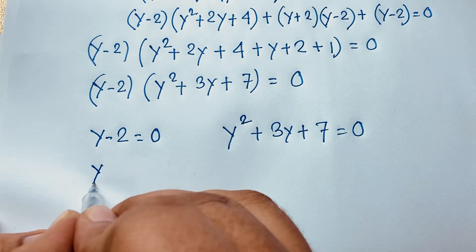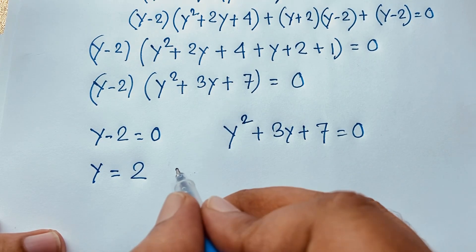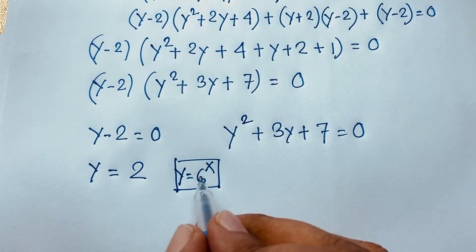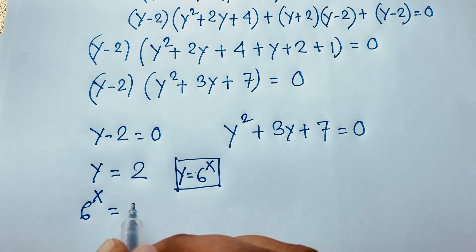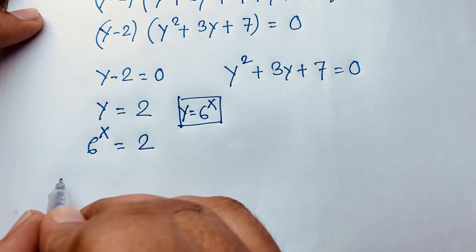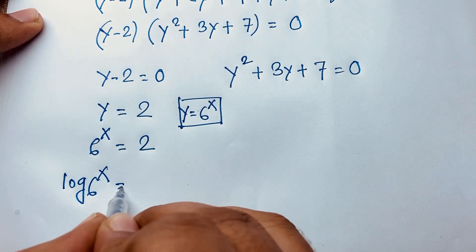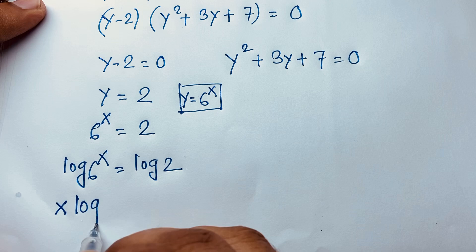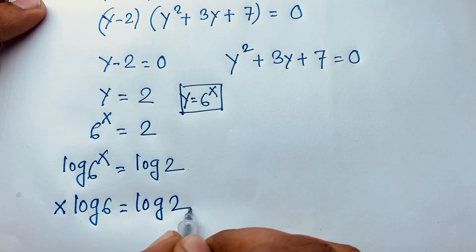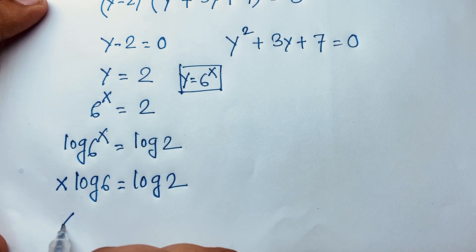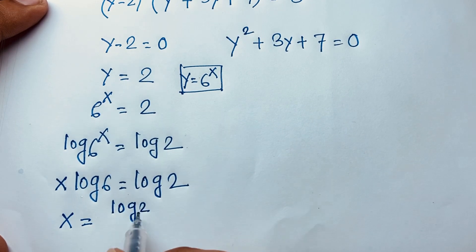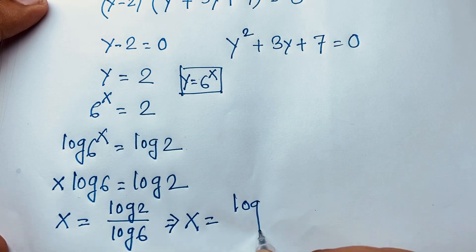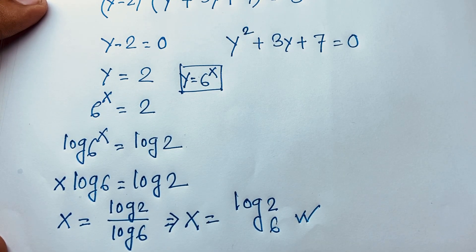Recalling that y equals 6 to the power x, we substitute: 6 to the power x equals 2. Applying logarithms to both sides: log(6 to the power x) equals log 2, so x·log 6 equals log 2. Dividing both sides by log 6: x equals log 2 over log 6, which equals log base 6 of 2. This is our final answer.